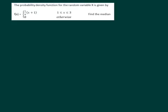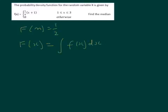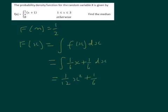Here we have an example where we're told the probability density function and we've got to find the median. We need to solve the equation F of m equals a half. Remember, F of x is the integral of f of x dx, so that is equal to the integral of (1/6)x plus 1/6 dx. Integrating gives 1/12 x squared plus 1/6 x plus c.